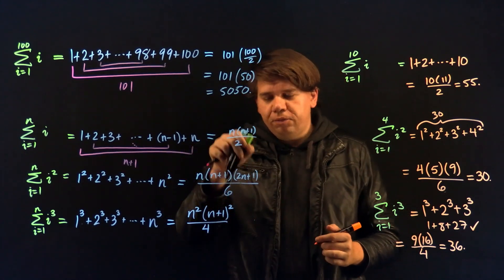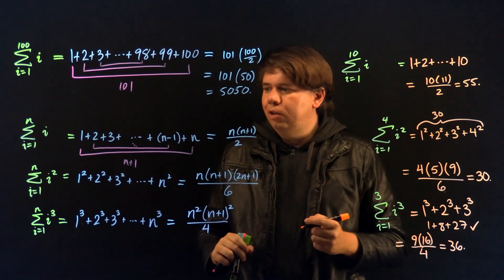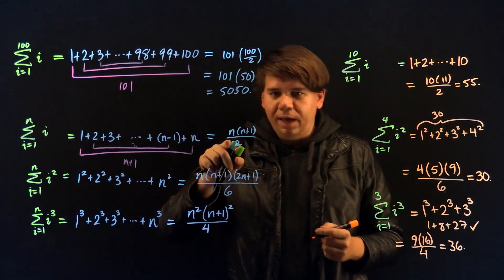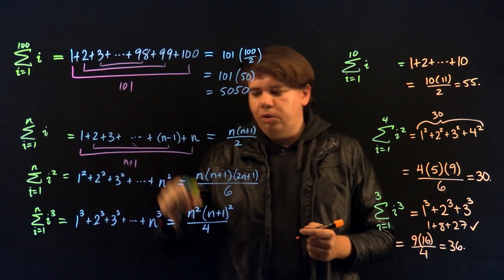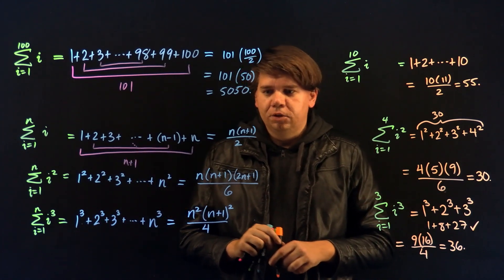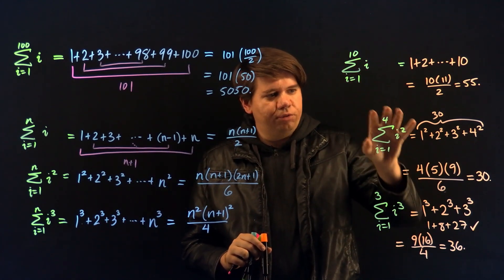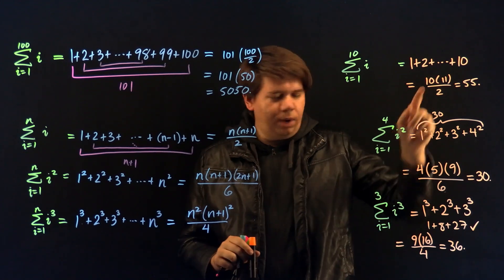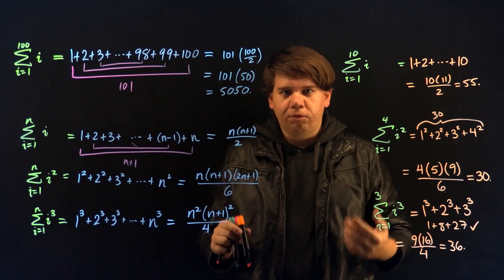Okay, cool. These formulas give you nice shortcuts in order to sum the numbers 1 through n, or 1 squared through n squared, or 1 cubed through n cubed. So now we both have a concise way of writing summations and a quick way of solving them using these formulas.